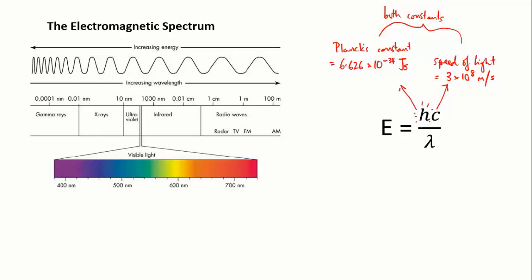You can see from the equation that if this part here is all constant, then as wavelength goes up, the right-hand side of the equation gets smaller and smaller, which means the energy is getting smaller. So large wavelengths mean small energy, and small wavelengths mean large energy.